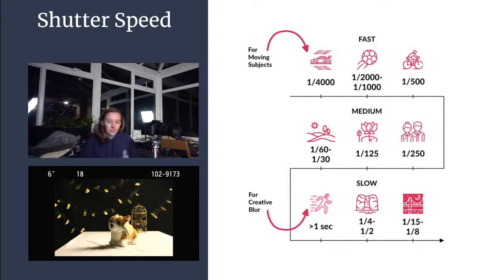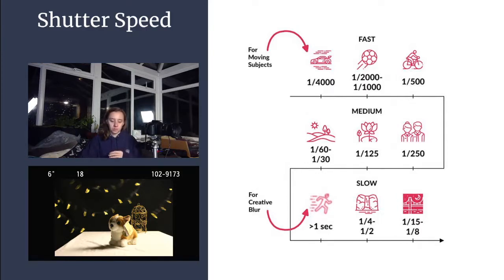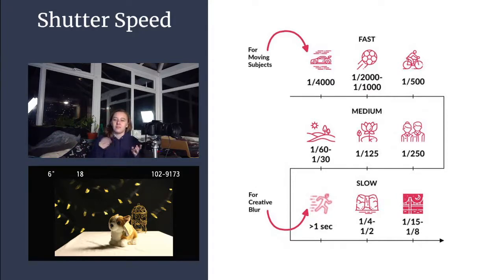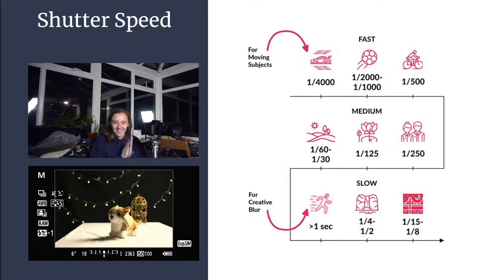Going back to the number of stops: if you halve the time the camera has to collect light — halve the shutter speed — it halves the light let in, dropping it by one stop. If you double the shutter speed it doubles the amount of light let in, moving up one stop. It all works by doubling and halving, so if you change your ISO by one stop you know you need to change your shutter speed by one stop to even it out and return to the same exposure you started on.